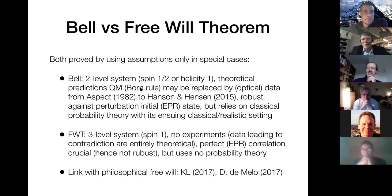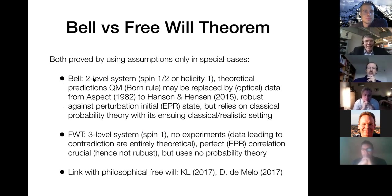If you compare these two theorems — and I spent a lot of time doing that — they basically have the same implications, but are technically different in how they use their assumptions. Bell is about two-level systems; the Free Will Theorem is about three-level systems. My randomness paper contains an appendix spelling this all out, and it's all in my book as well.